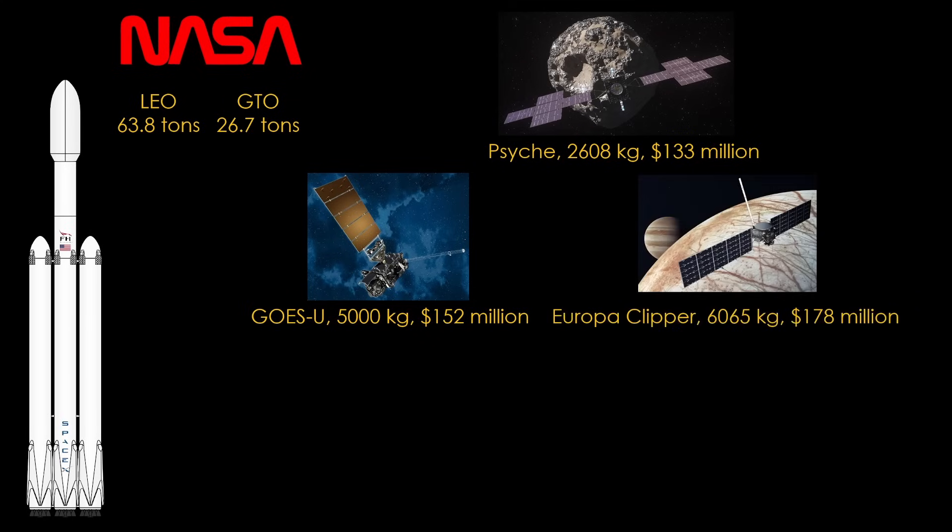Europa Clipper will take a very long journey to arrive at Jupiter's moon Europa, and launching the 6,065 kilogram satellite in late 2024 will cost NASA $178 million. Europa Clipper was originally designed to fly on NASA's SLS rocket, which was big enough to have gotten the probe there much faster, but lack of available SLS rockets and their $2 billion dollar per launch price caused NASA to move to Falcon Heavy.